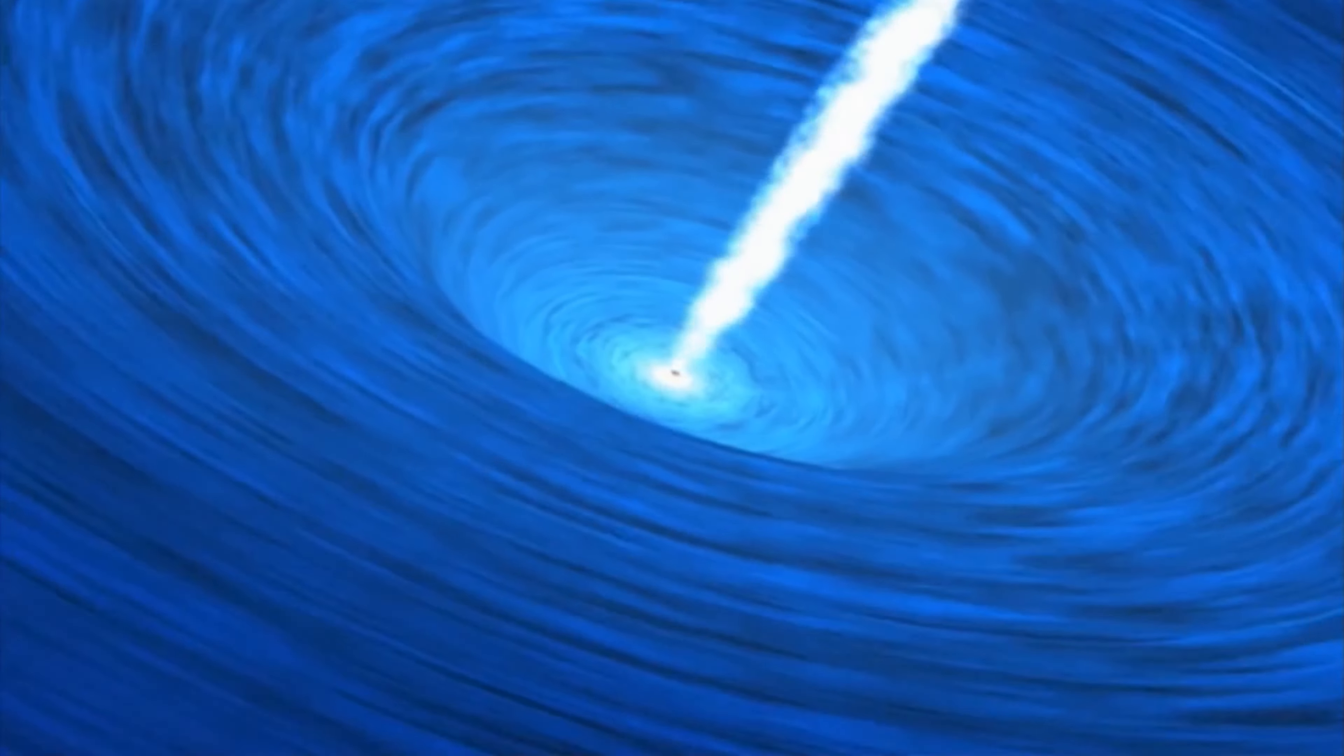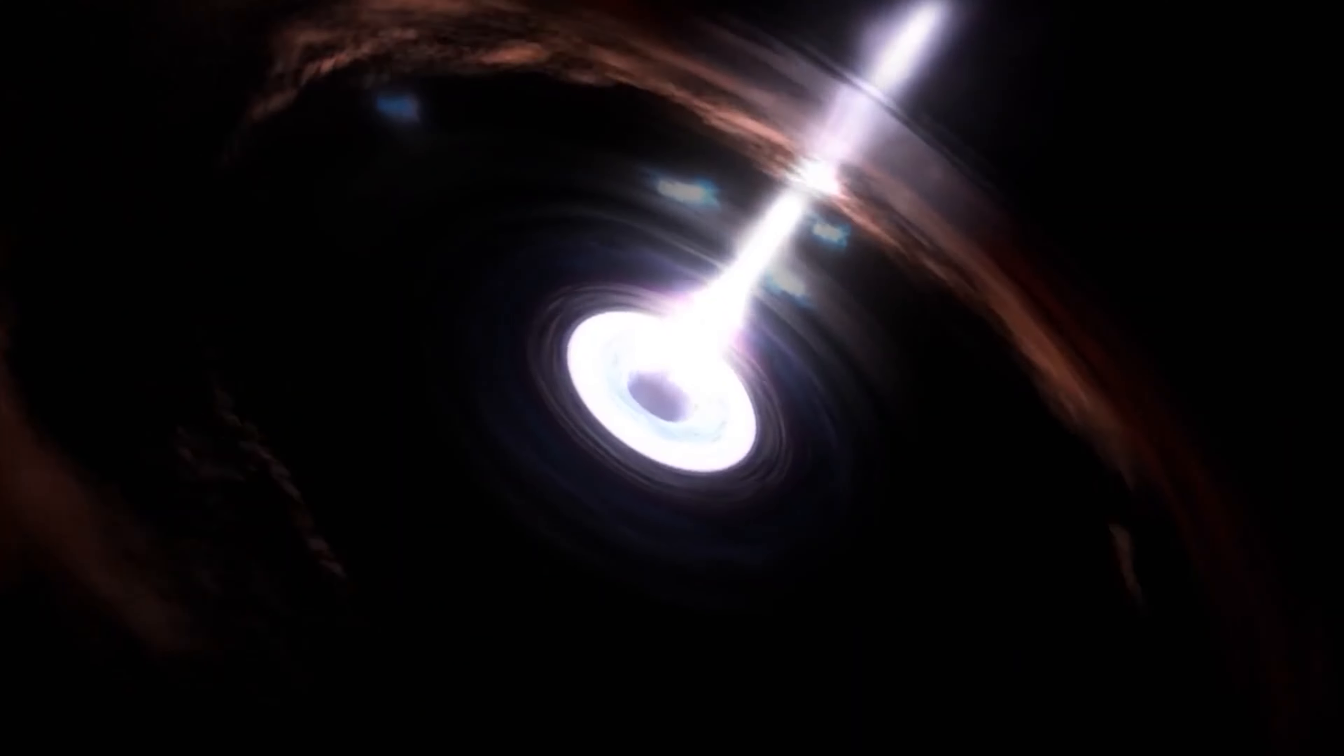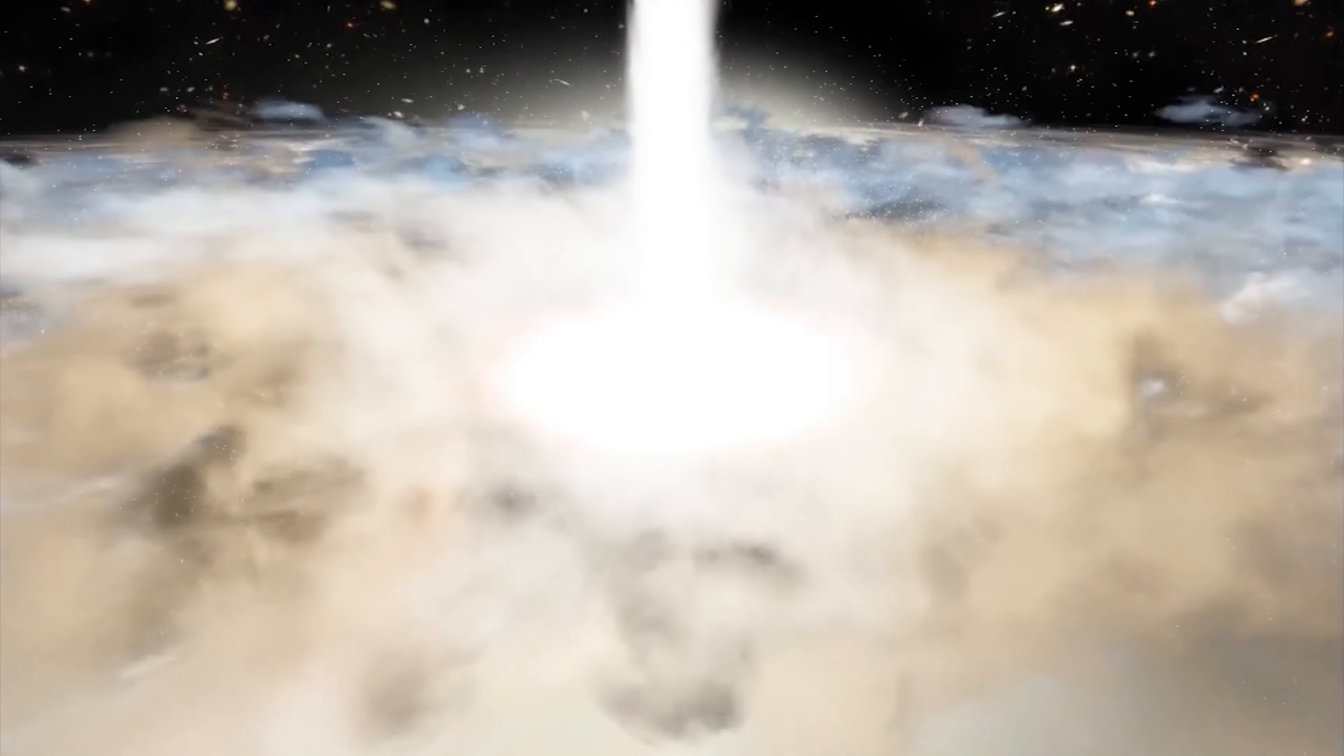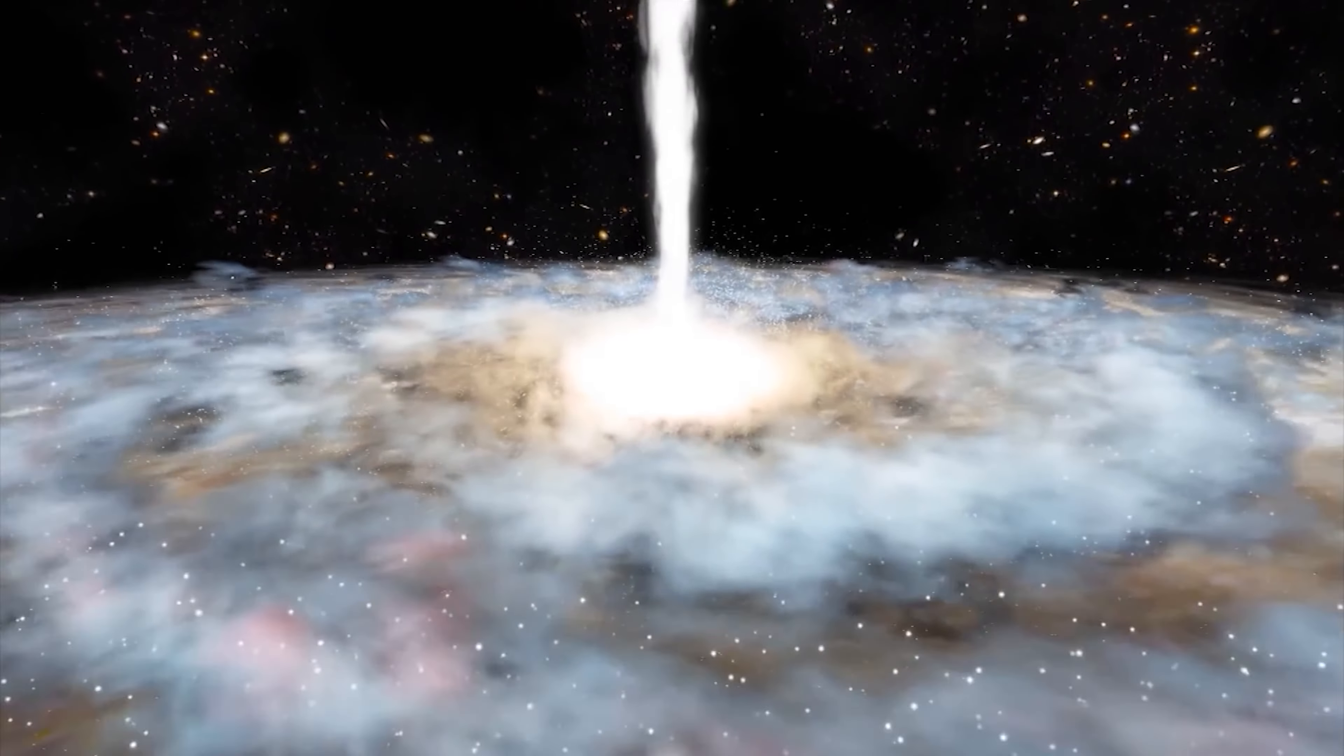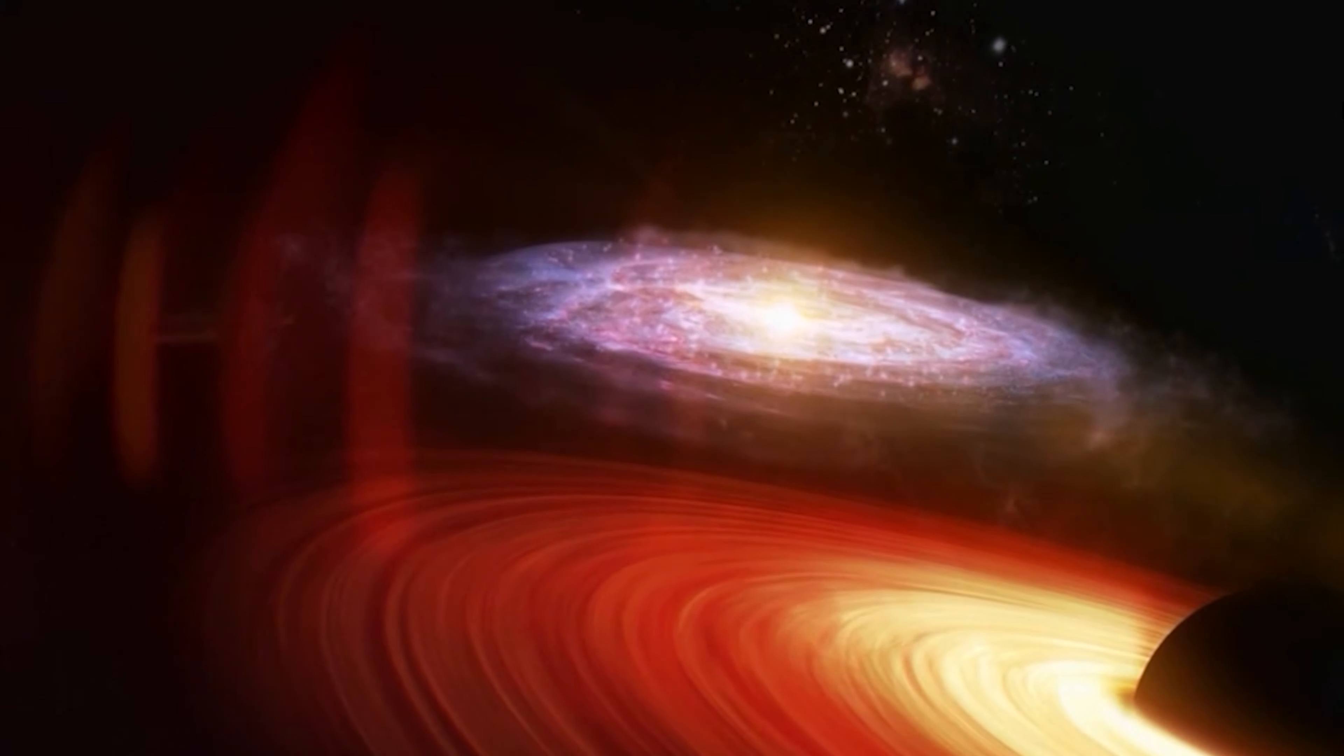Supermassive black holes, on the other hand, are located in the center of galaxies and have a mass more than 100,000 times that of the Sun. There are various views among experts on how supermassive black holes are formed. But the most popular theory is that they are formed when, for example, dark matter evokes a huge cloud of interstellar gas in the still-young universe, which then collapses.